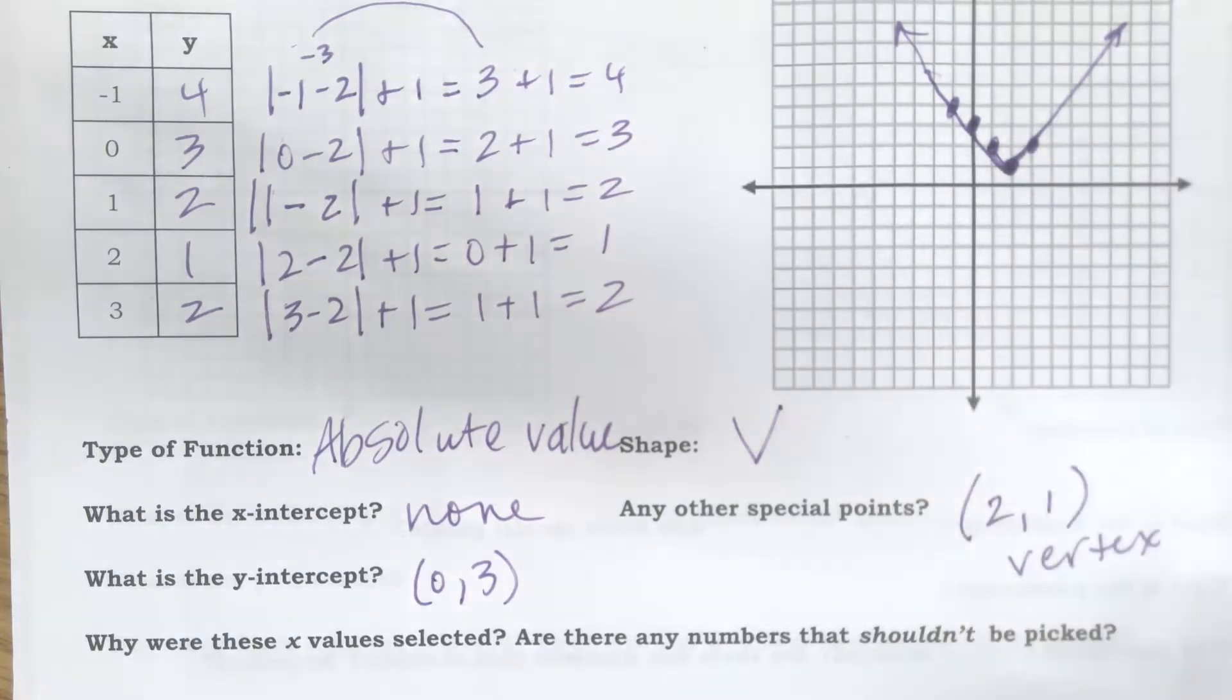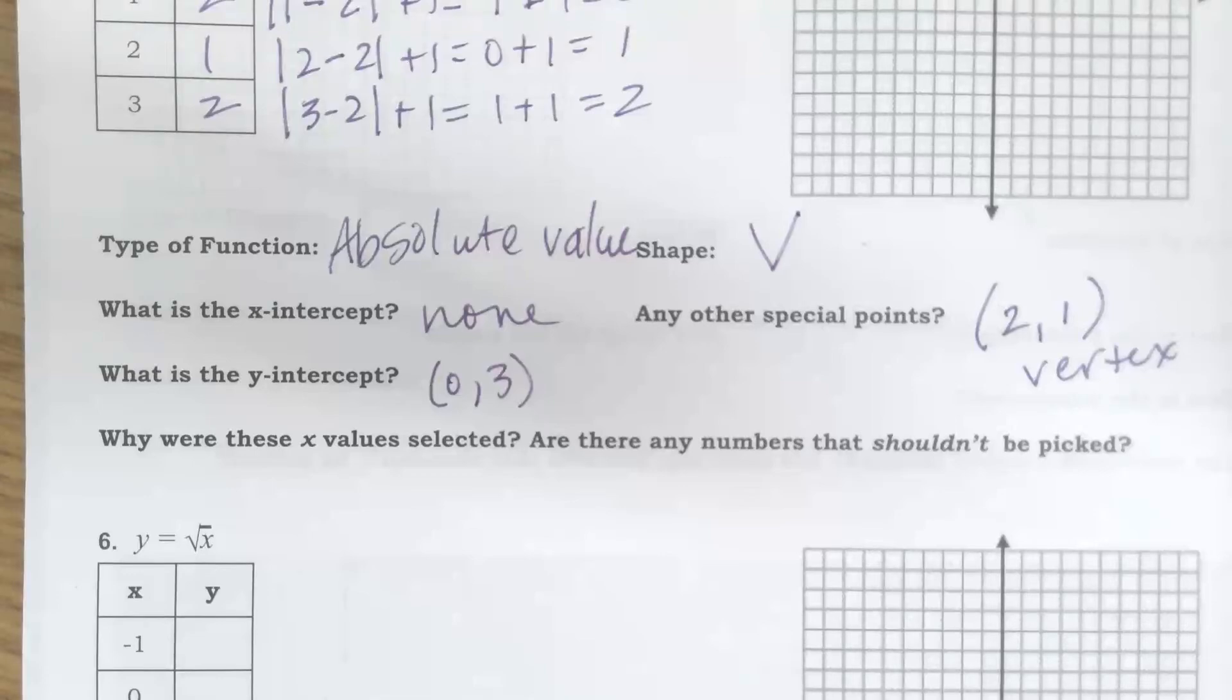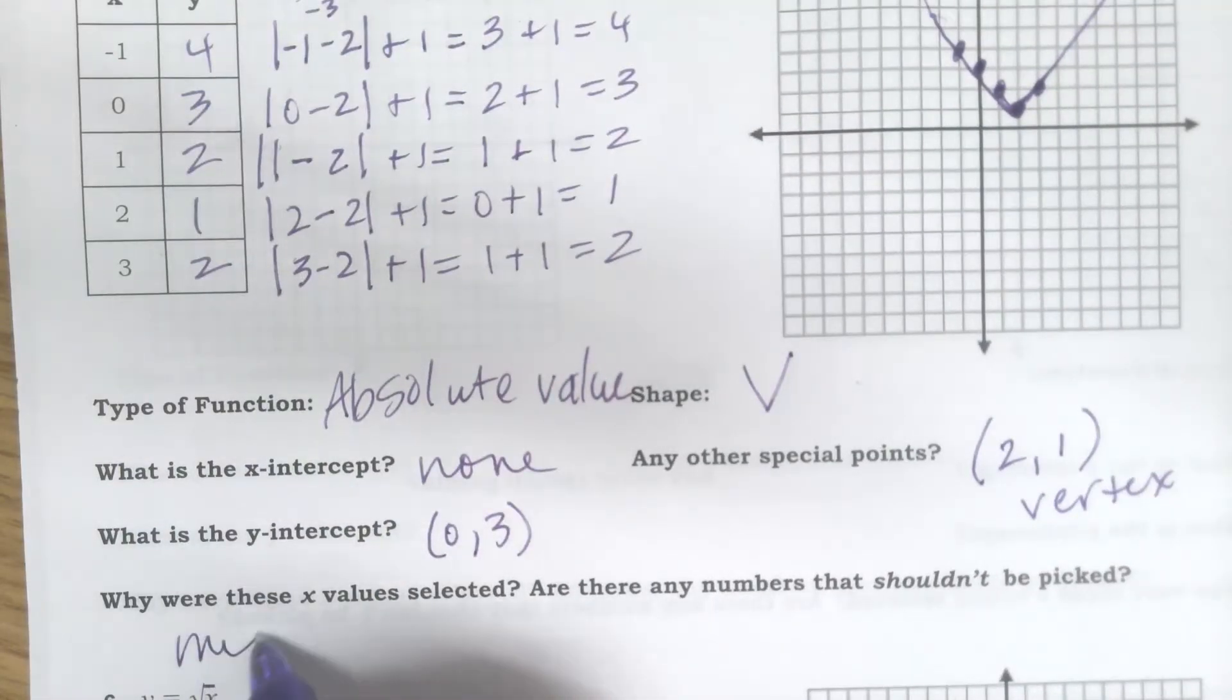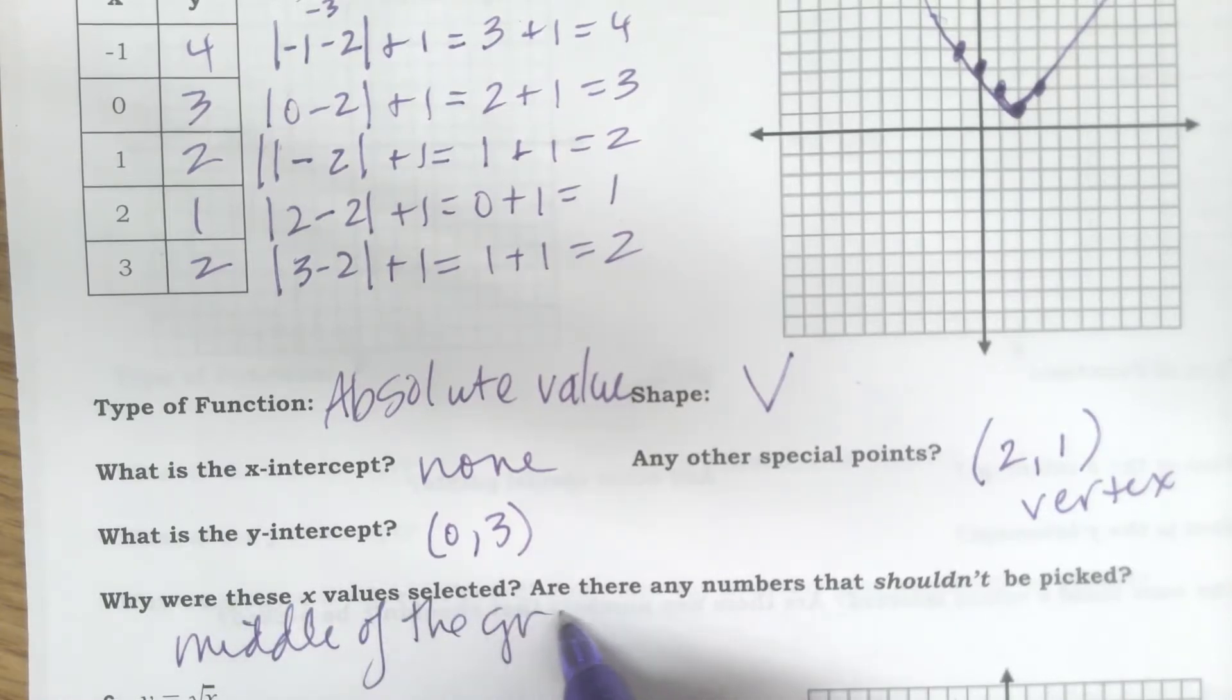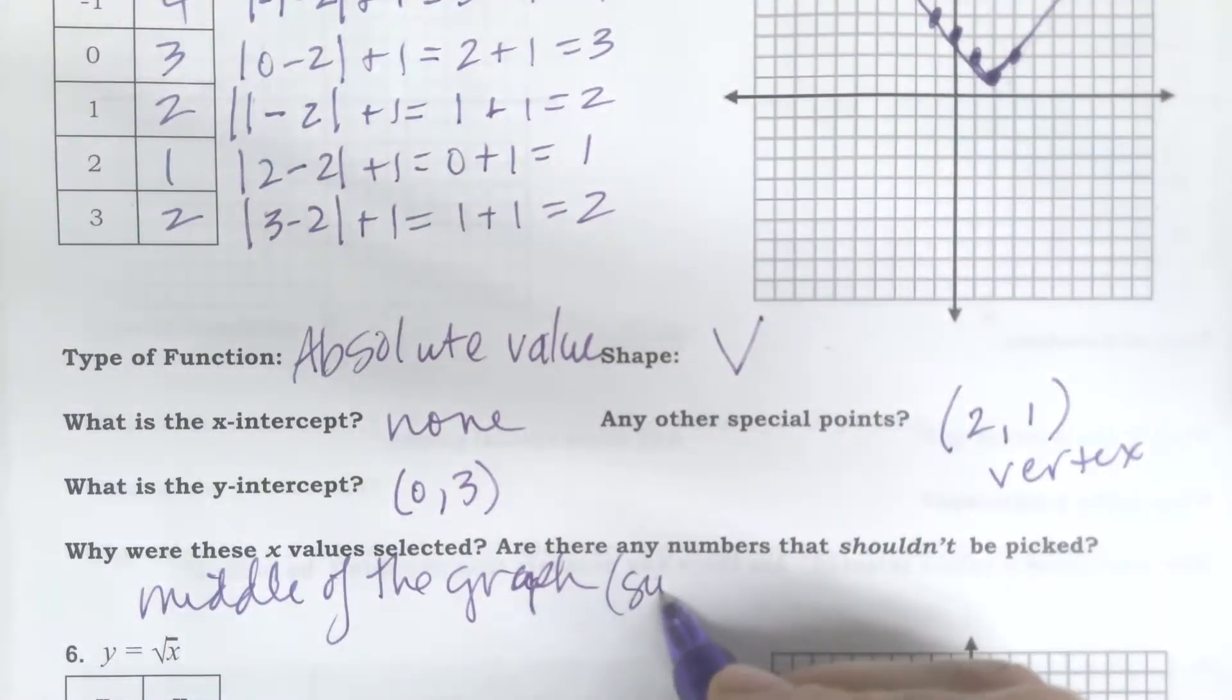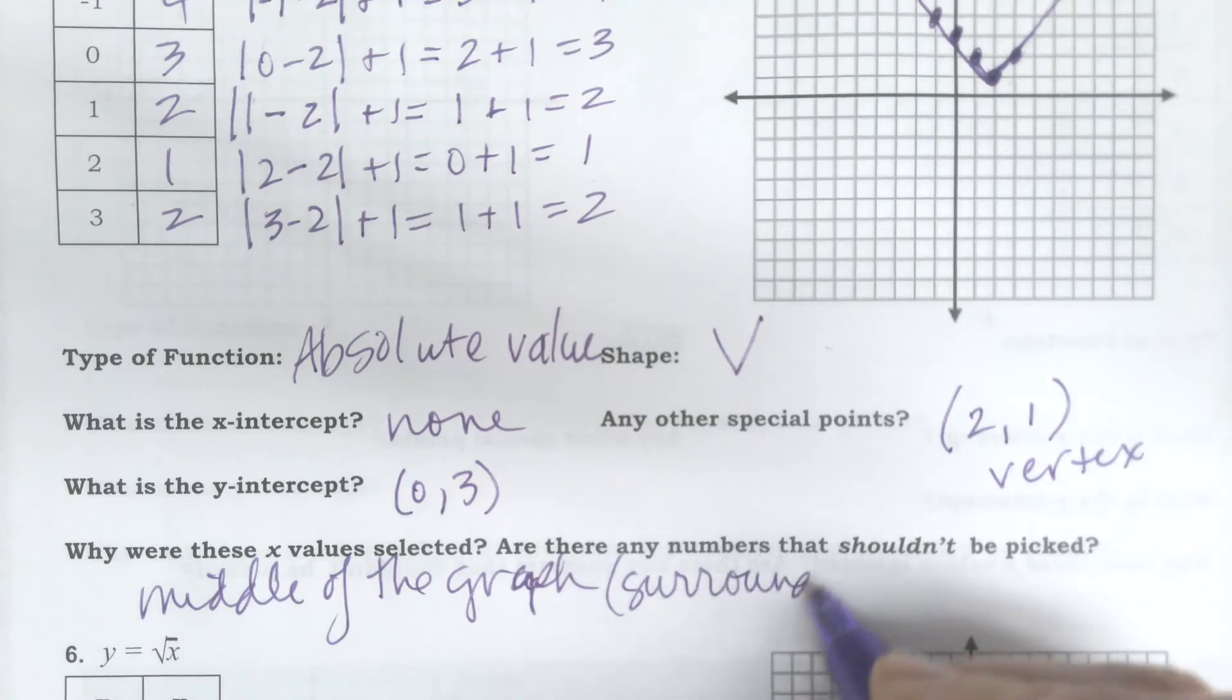Where the point comes where it changes direction, that's a special point. Why did we choose these x values? Again, kind of middle of the graph. I like to pick a few points on each side. It also gave me, surrounded the vertex. I didn't necessarily know that at first, but now I can see that.